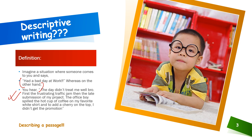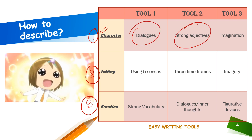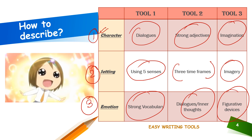This is where descriptive writing comes in, rather than just telling someone how it was. I've broken things down into three elements: we need to describe character, setting, and emotion. For character, the tools are dialogues, strong adjectives, and imagination. For setting, we use the five senses, three time frames, and imagery. For emotion, we need strong vocabulary, dialogues or inner thoughts, and figurative devices.